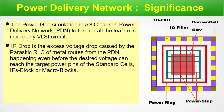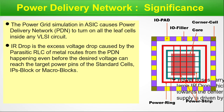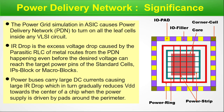IR drop is the excess voltage drop caused by parasitic RLC of the metal routes from the PDN, happening even before the desired voltage can reach the target power pins of standard cell IP blocks or macro blocks. The IR drop happens before the actual voltage from the power rings can reach specific standard cells, macro blocks, or IP blocks via the power strips. Power buses carry large DC current causing large IR drop, which gradually reduces VDD towards the center of a chip when power supply is driven by pads around the perimeter.